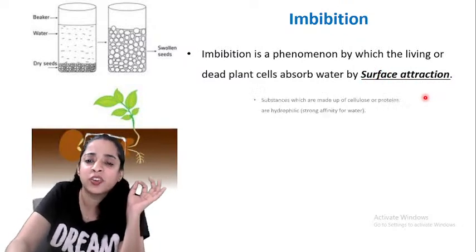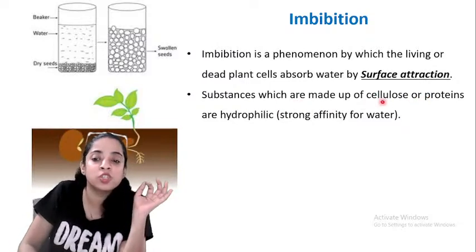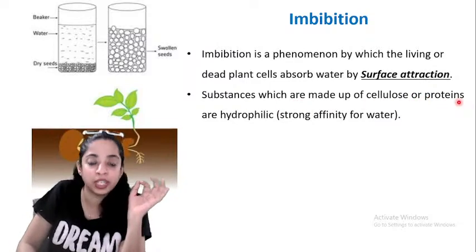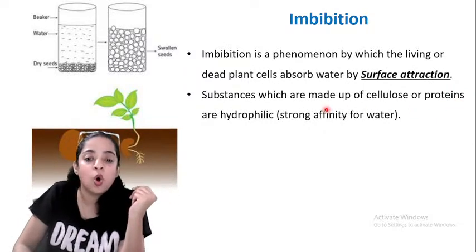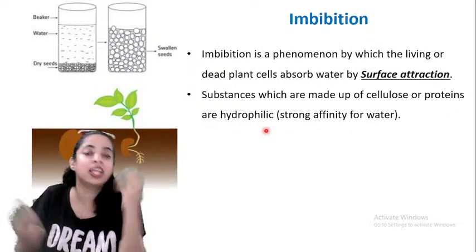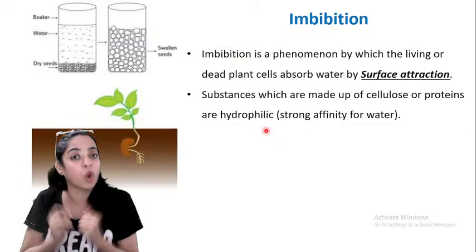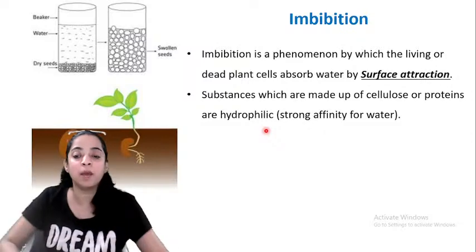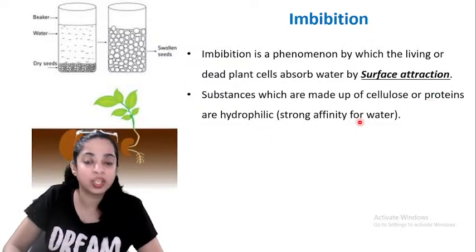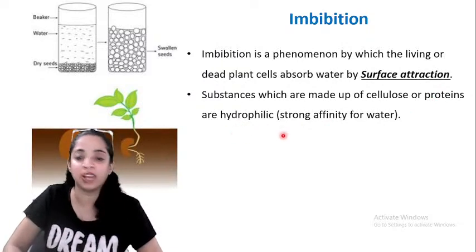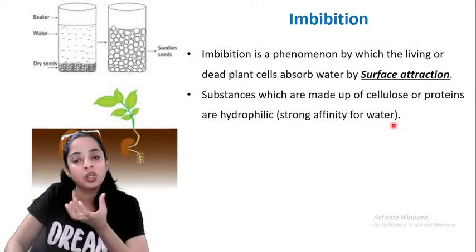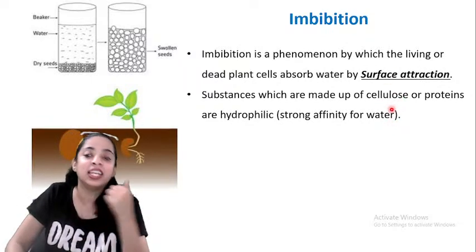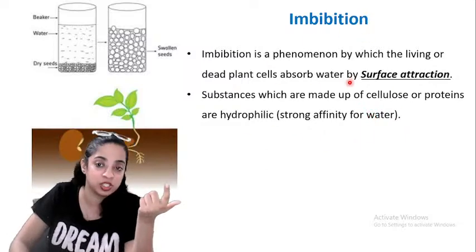Both living and dead plant cells can perform imbibition. For example, dry seeds swell when placed in water. Also, wooden doors swell up on contact with water — this is also imbibition, as dead plant cells show imbibition too. Due to imbibition pressure, the seed coat ruptures in a germinating seed, and imbibition is also an important force in the ascent of sap.